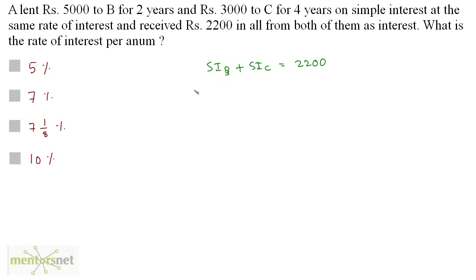Now simple interest paid by B will be equal to PNR upon 100. P is 5000 times N is 2 years times R is what we have to find upon 100. In the same way is the case with C. So we have P as 3000, N as 4 and R is the same as B.